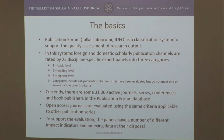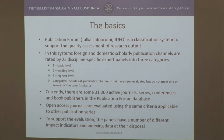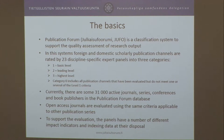First, briefly about the basics. Most of you may know that Publication Forum is a classification system to support the quality assessment of research output. As of last year it has been used as a quality indicator for publications in the university's funding model, and the publications count for 13% of the public funding for universities. In this system, both foreign and domestic journals or publication channels are rated by expert panels into three categories, of which three is the highest, and there is also a category zero which includes all publication channels that have been evaluated but do not meet one or several of the criteria.